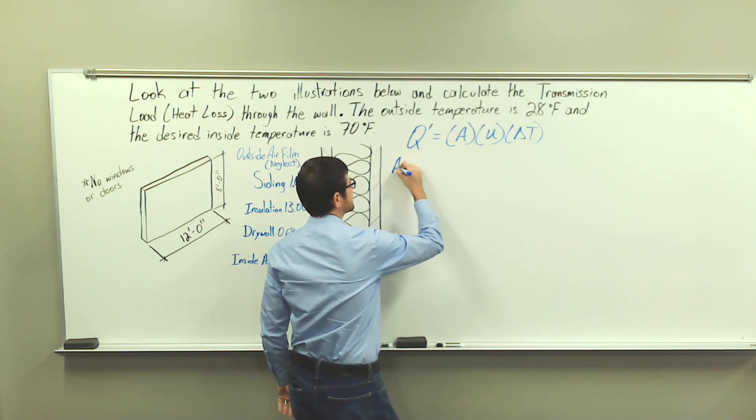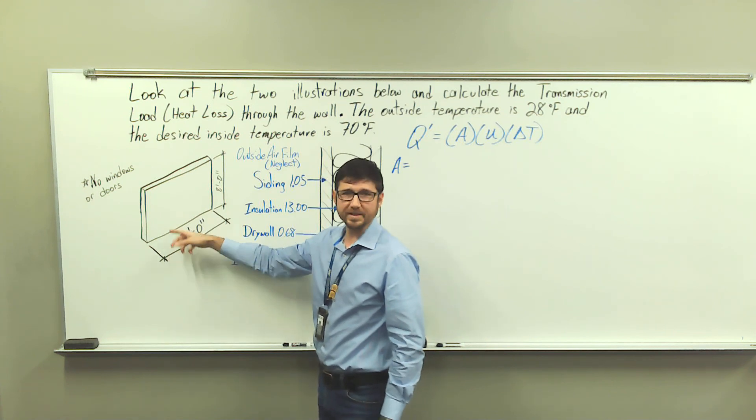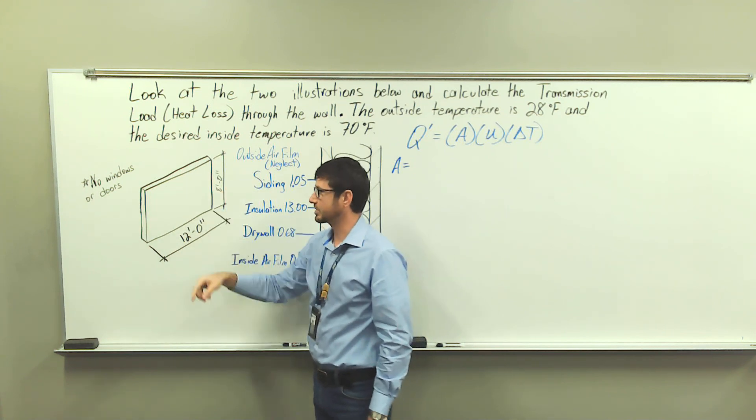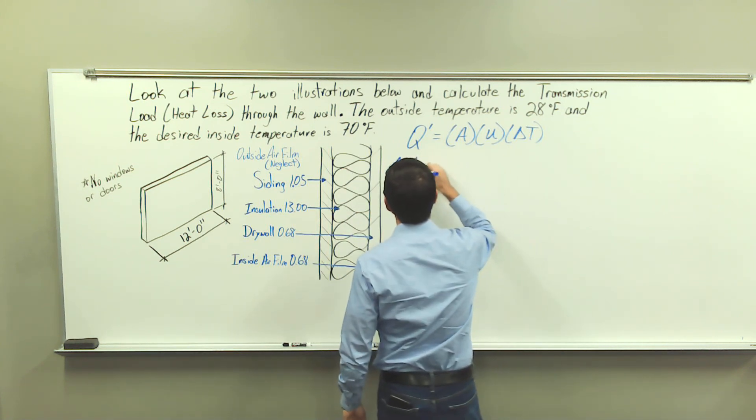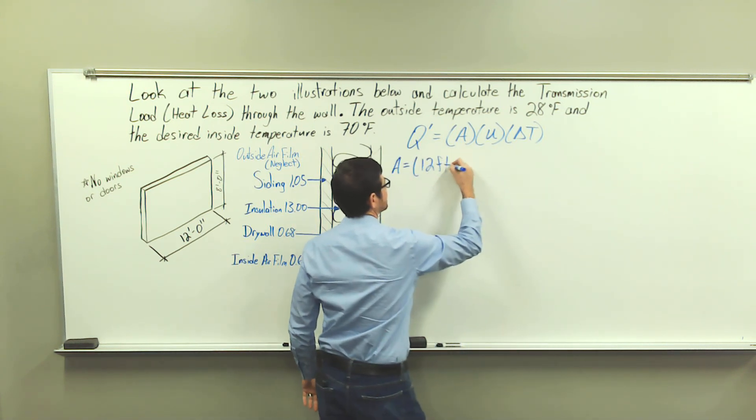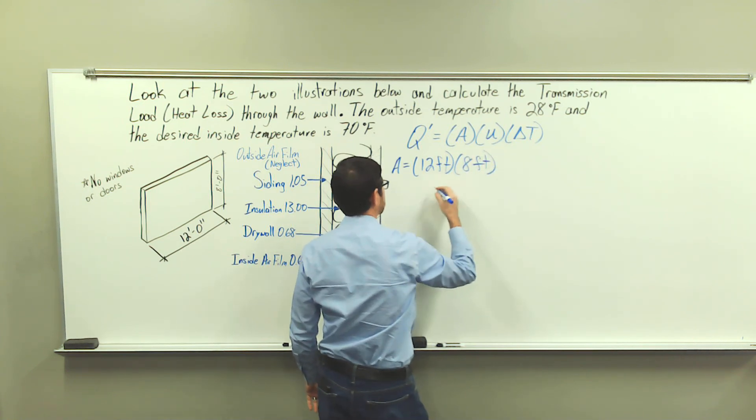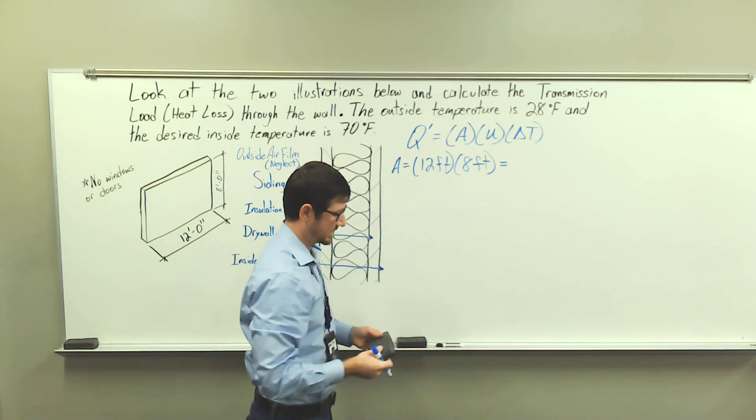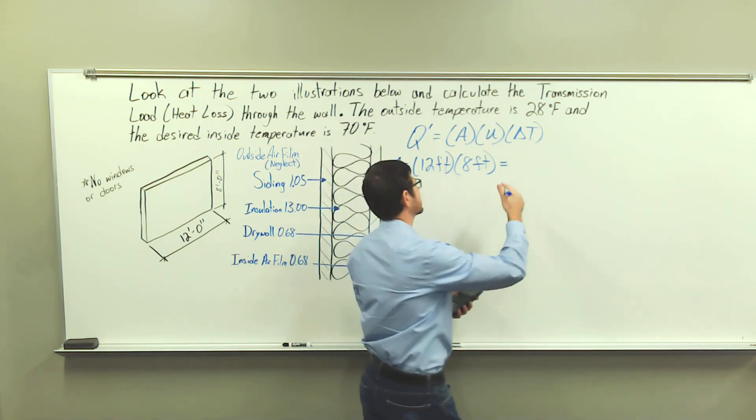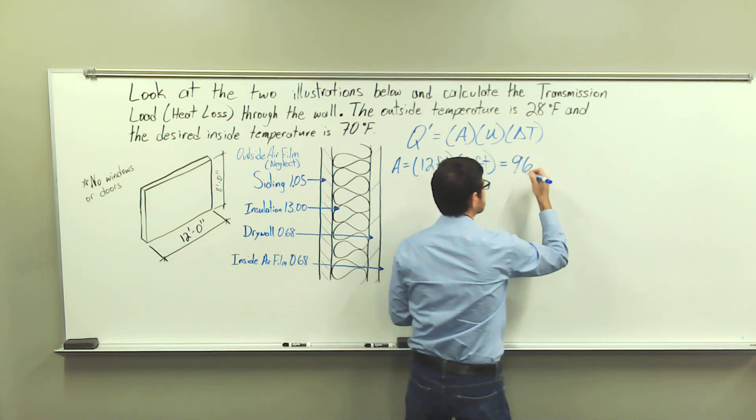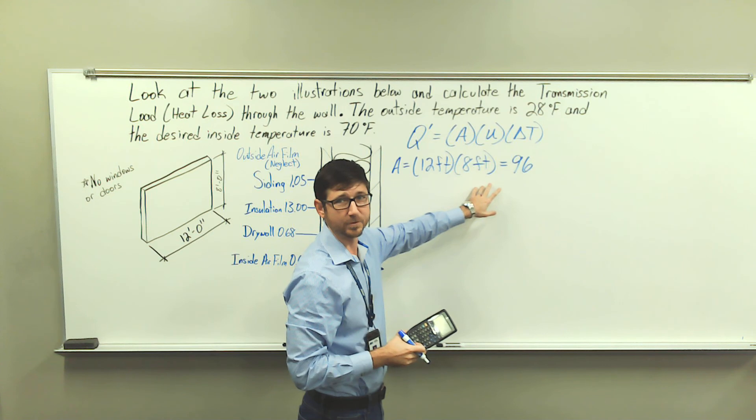Area. So the area of our wall, we are given the overall width and height dimensions. And remember, there's no windows and doors. So we have 12 feet. So let's go ahead and get out our calculators. And I've got 12 times 8. That's going to be 96. And so we have foot times foot. This is going to be foot squared.